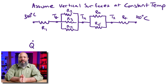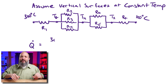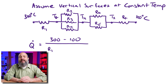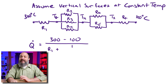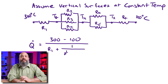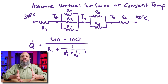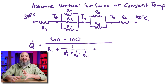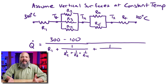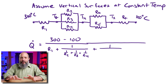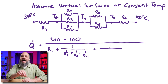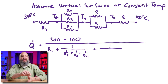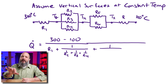To solve a heat transfer problem in the style of an electrical circuit, q-dot equals delta-T divided by the resistance. This is analogous to V equals I times R, where voltage is your change in temperature, current is the thing that flows — that's your heat — and resistance is everything else. For walls, resistance is L over K times A. Rearranging, q equals delta-T divided by your total resistance.